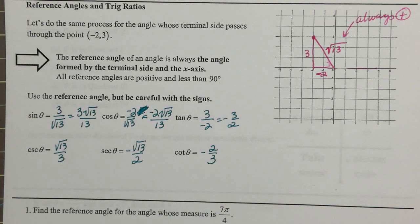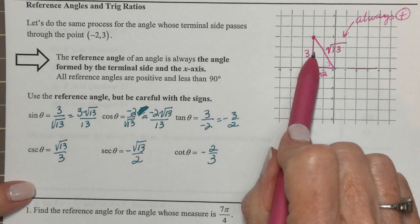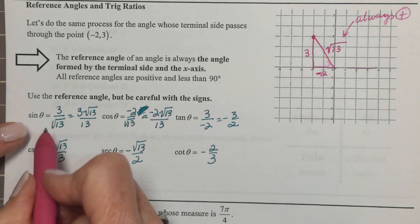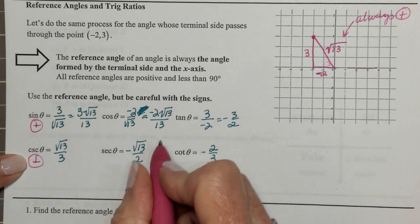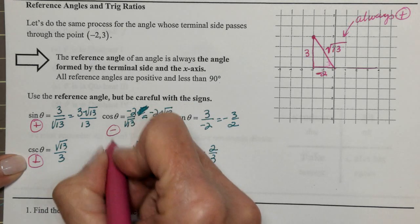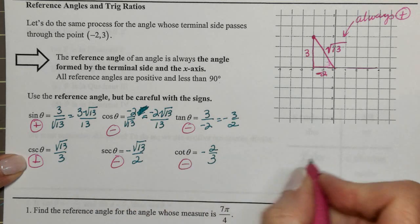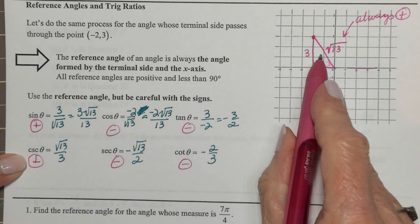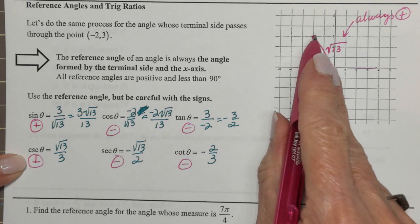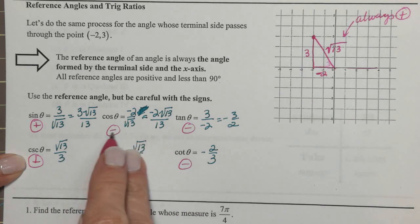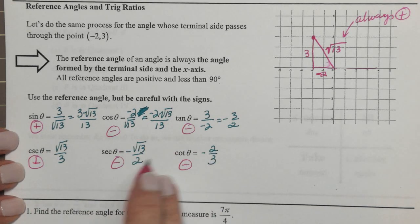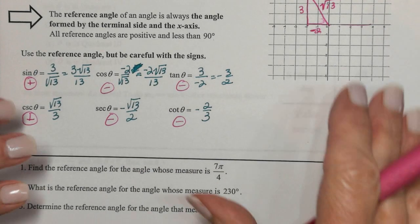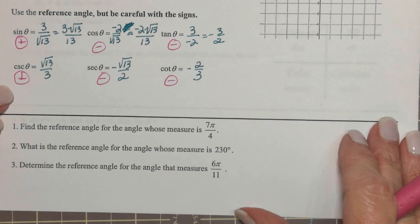So we found out something quite important. In quadrant 2, sine was positive and cosecant was positive, but the other ones were all negative. Any angle that terminates in quadrant 2 will be like this — only sine and cosecant are positive, the others are negative. Before we generalize that, let's talk more about reference angles.